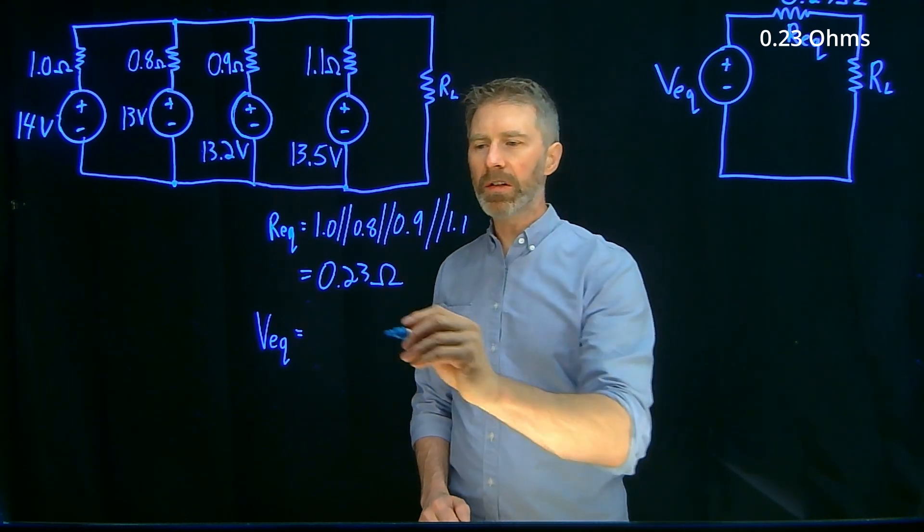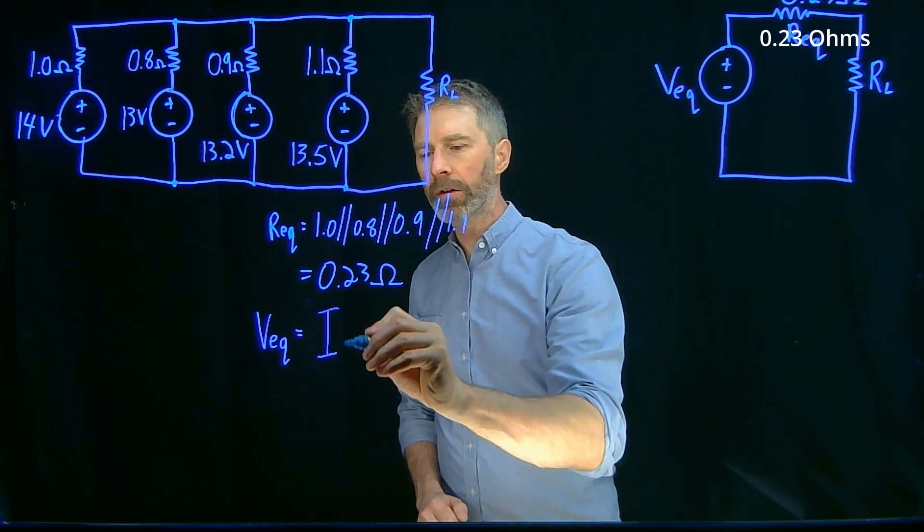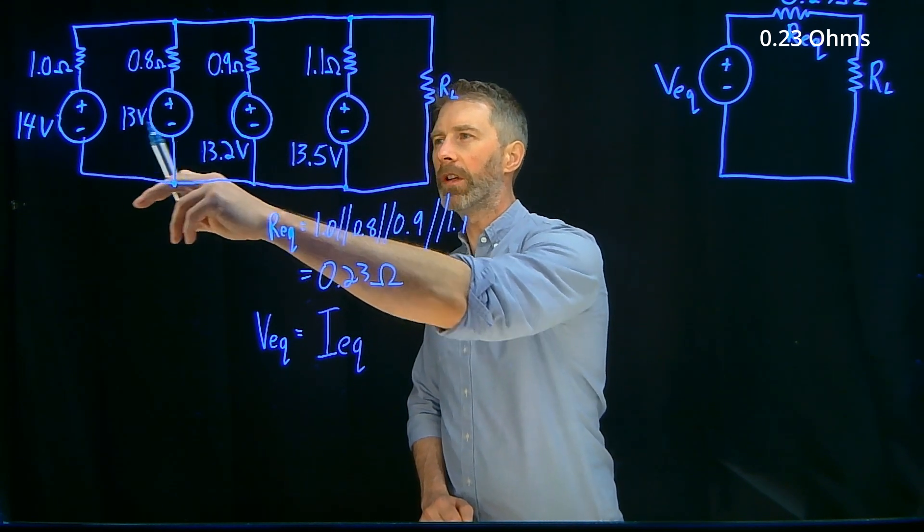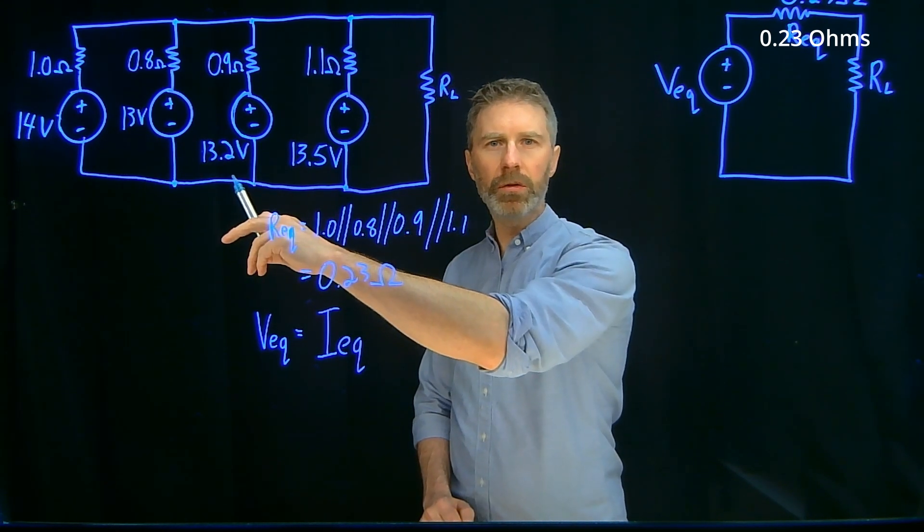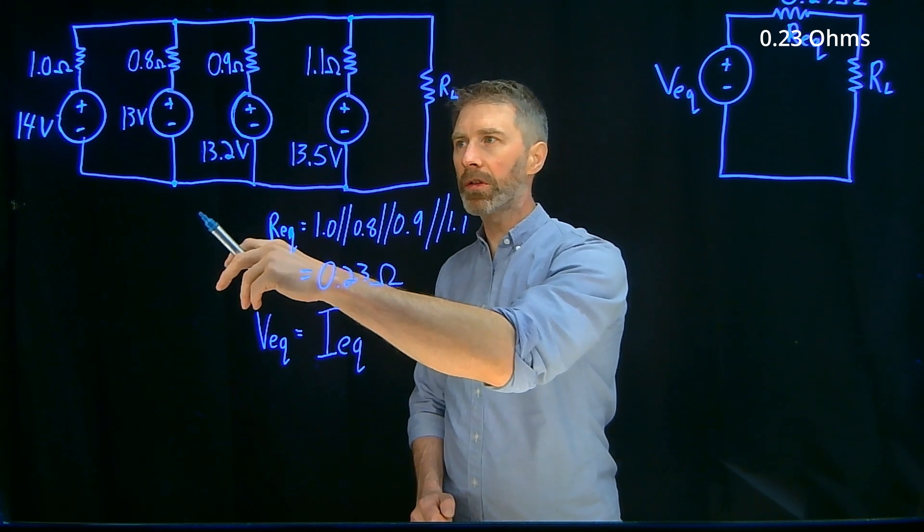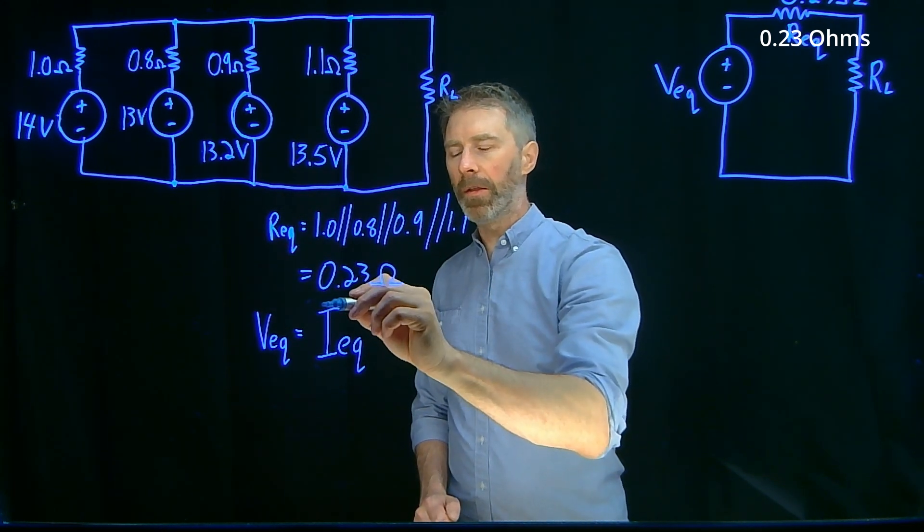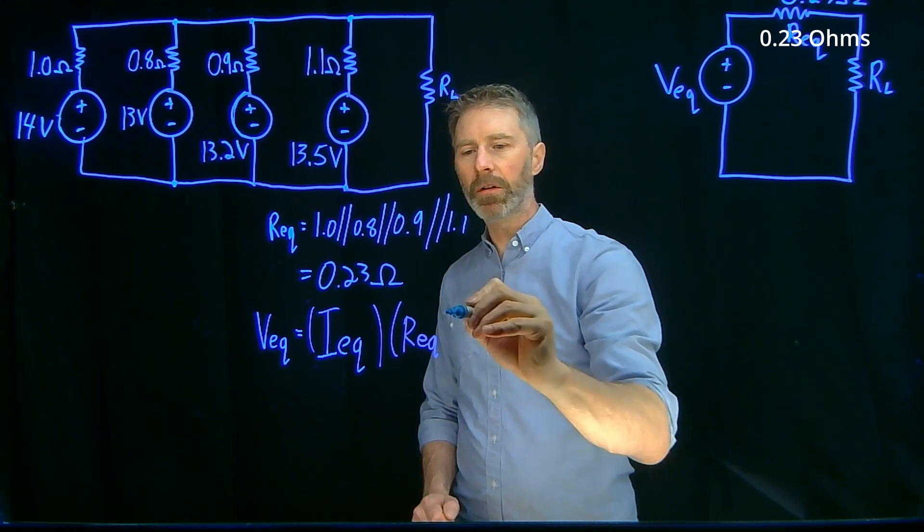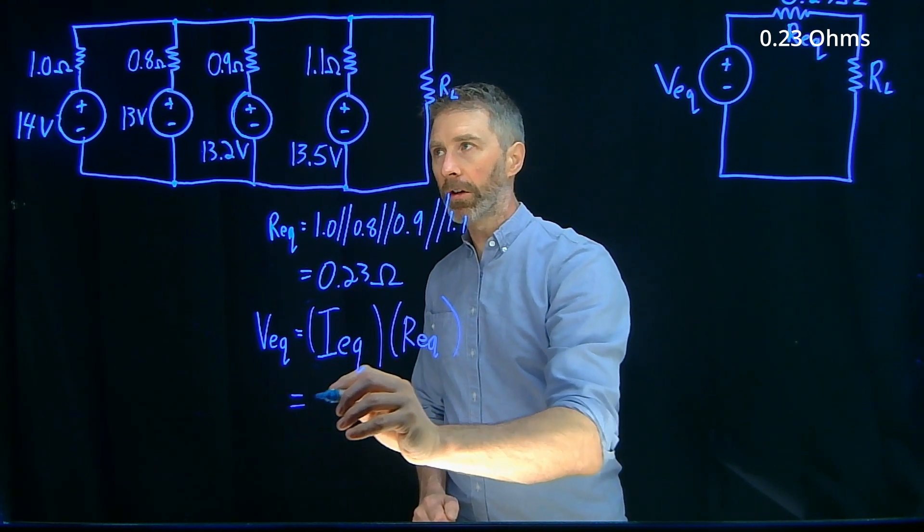And the equivalent voltage is equal to the equivalent current that would be created by the sum of each one of these if they were converted to their equivalent current source. So that equivalent current gets multiplied by the equivalent resistance that we just calculated above. And this equivalent current would